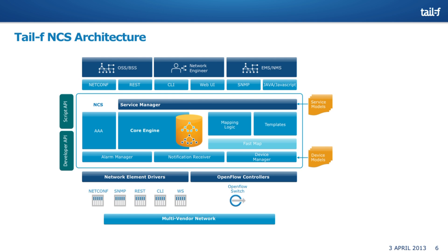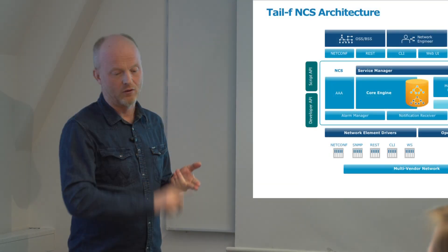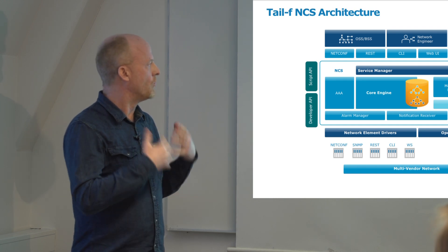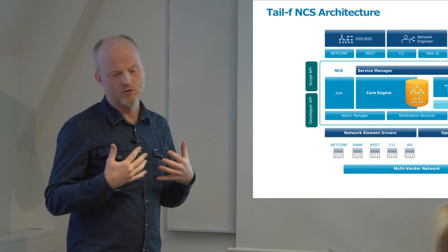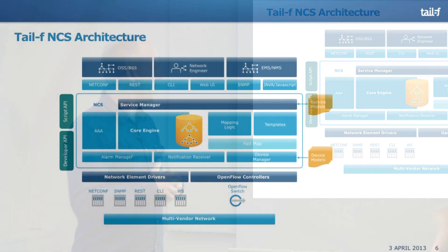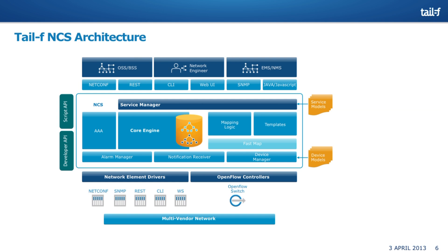Northbound of NCS we have several UIs: one web UI and two different flavors of CLI — Cisco-style or Juniper-style. We have programmatic interfaces like REST, northbound SNMP (typically for reading stats rather than doing config), and a netconf northbound interface for integration with order management systems. We also have programmatic APIs for developers and script APIs for scripters to extend the system with further functionality.